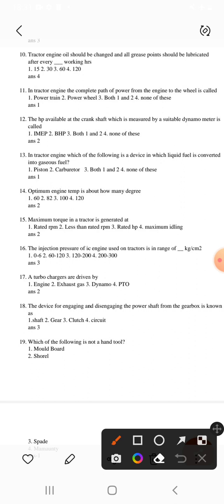Question 12: The HP available at the crankshaft which is measured by a suitable dynamometer is called BHP, brake horsepower. Question 13: In tractor engine, which of the following is a device in which liquid fuel is converted into gaseous fuel? First option, carburetor, will be correct. Question 14: Optimum engine temperature is about 82 degrees.